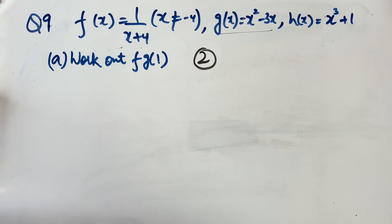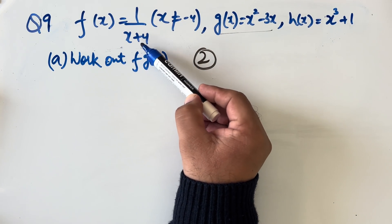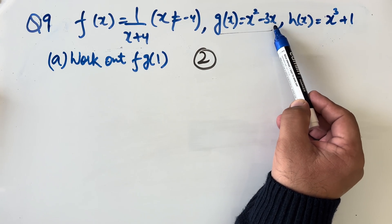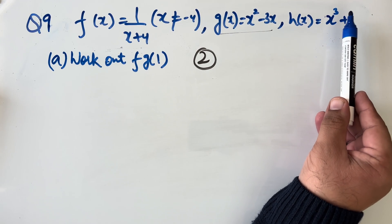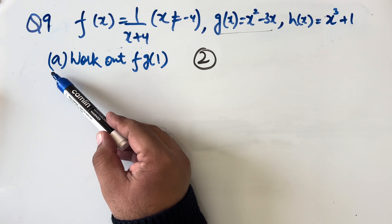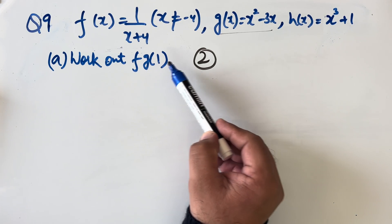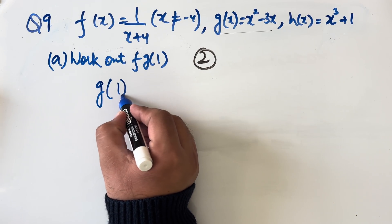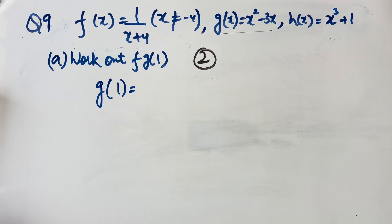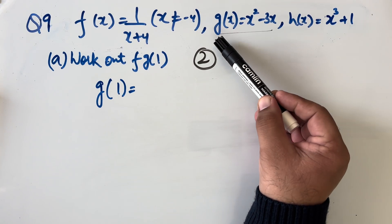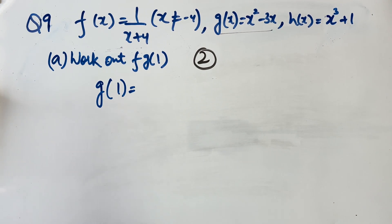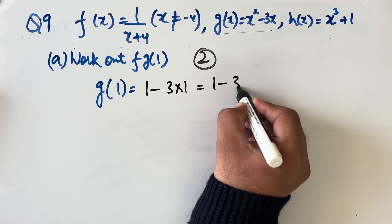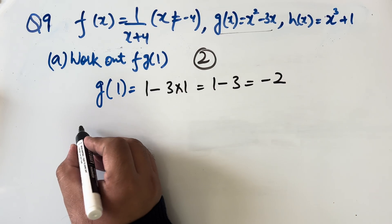Question 9: f(x) = 1/(x + 4) where x ≠ −4, g(x) = x² − 3x, h(x) = x³ + 1. Part a: work out f(g(1)). This is worth 2 marks. First, calculate g(1): substituting x = 1 into x² − 3x gives 1 − 3 = −2.